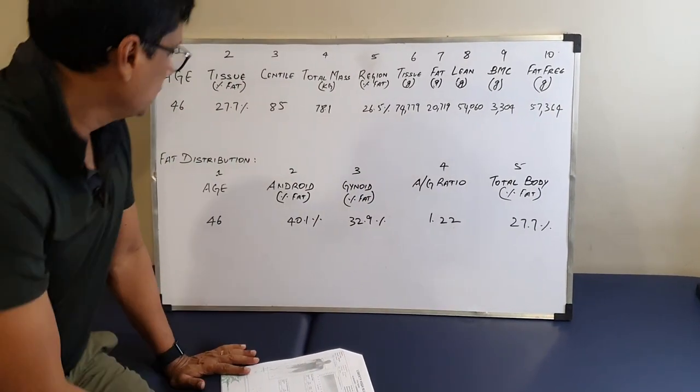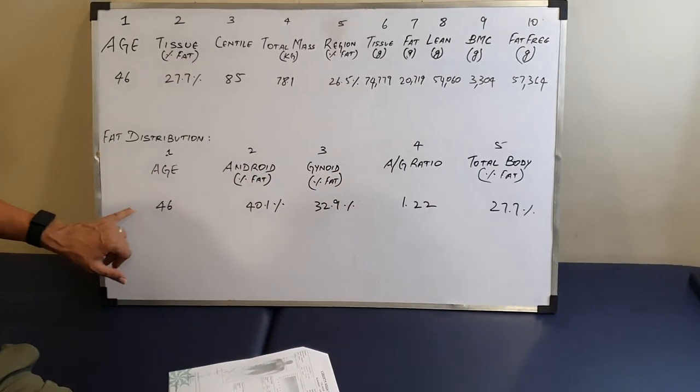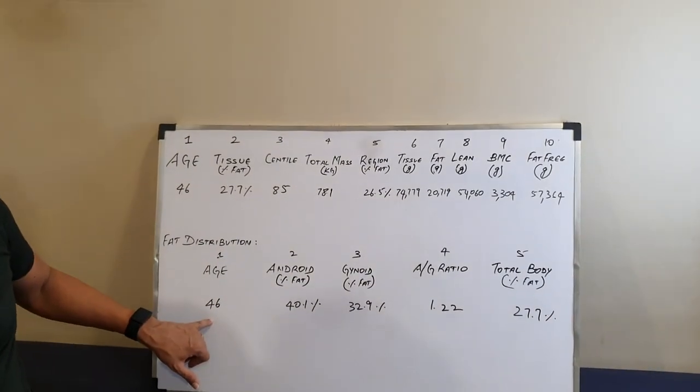If you scroll down a bit, you will see a set of columns here. Age is clear here.